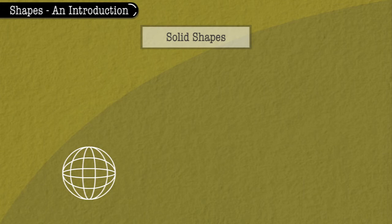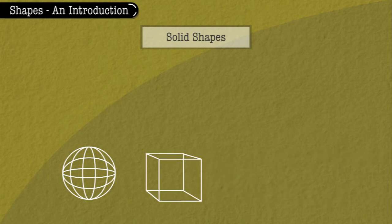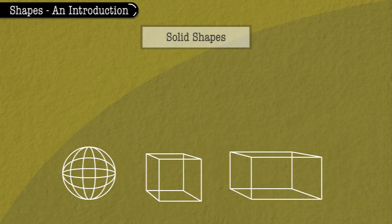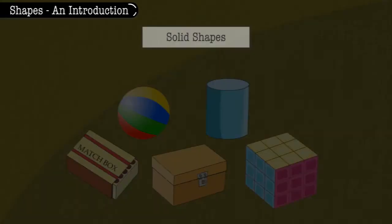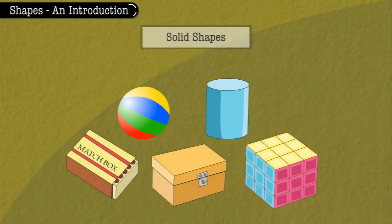A cube, a prism, a cylinder, etc. are solid shapes. Here are a few objects having solid shapes. Look at them.